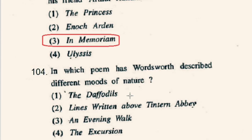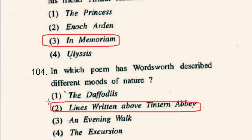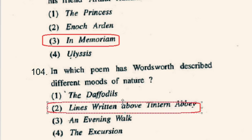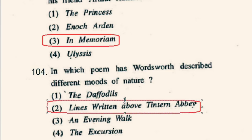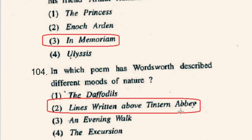Question number 104: In which poem has Wordsworth described different moods of nature? Wordsworth described different moods of nature in the poem 'Lines Written a Few Miles above Tintern Abbey,' originally published in 1798. The correct option will be 2nd option, Lines Written above Tintern Abbey.